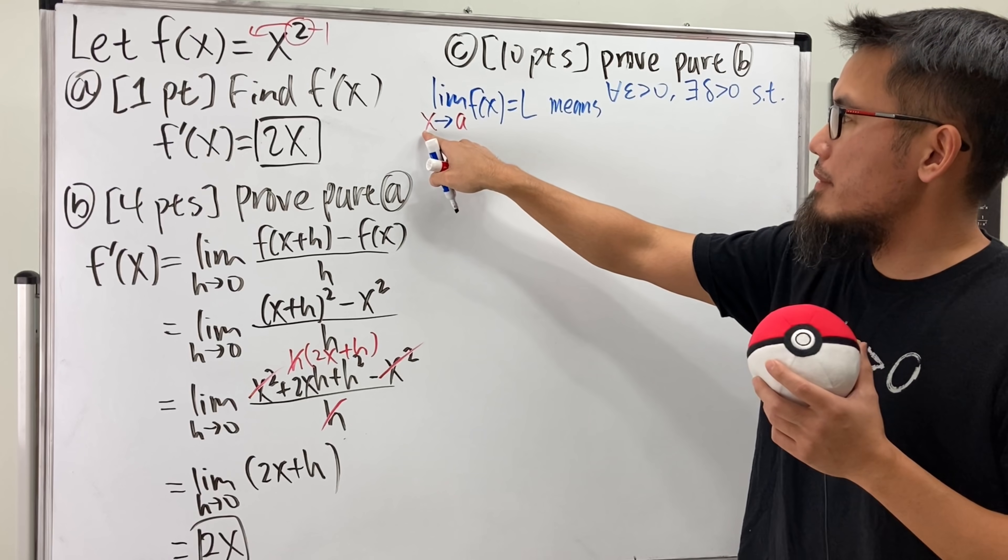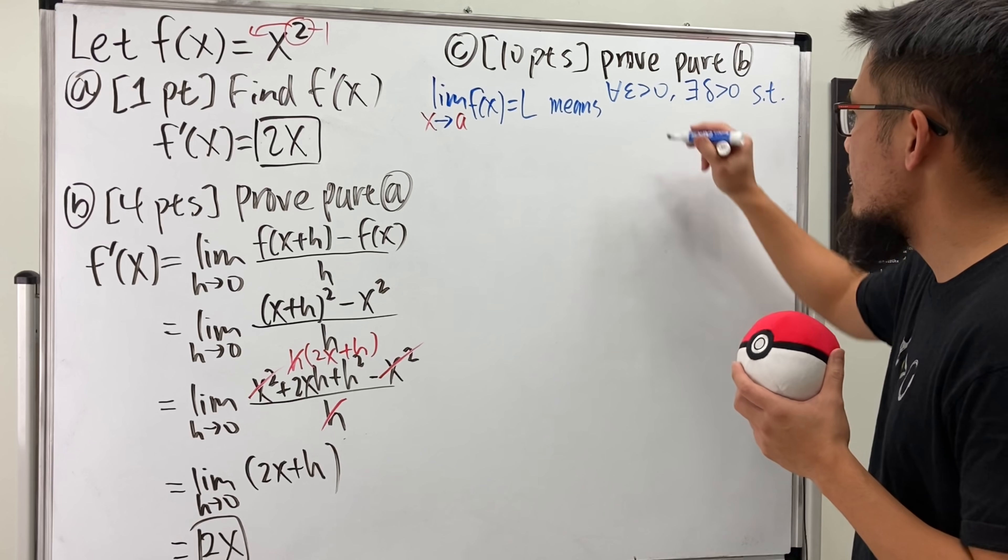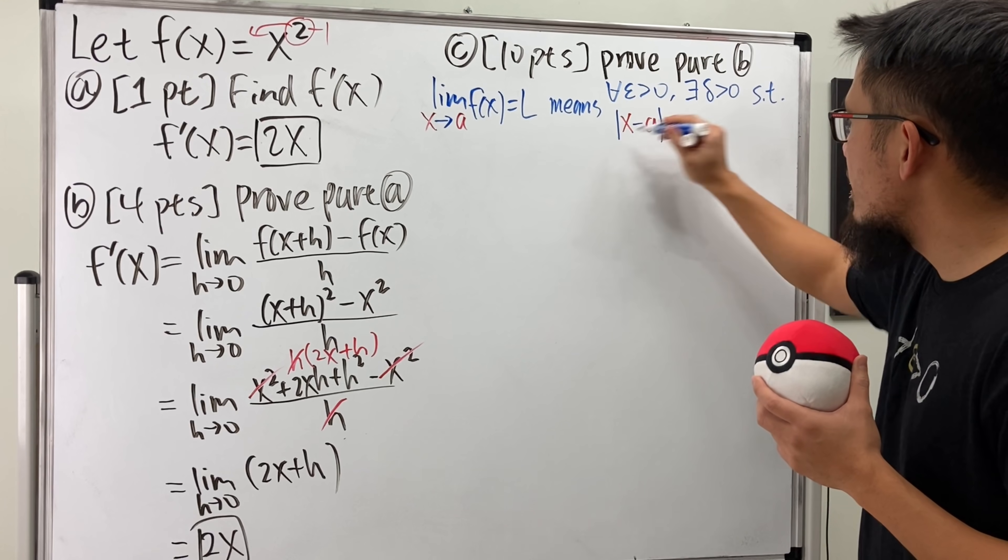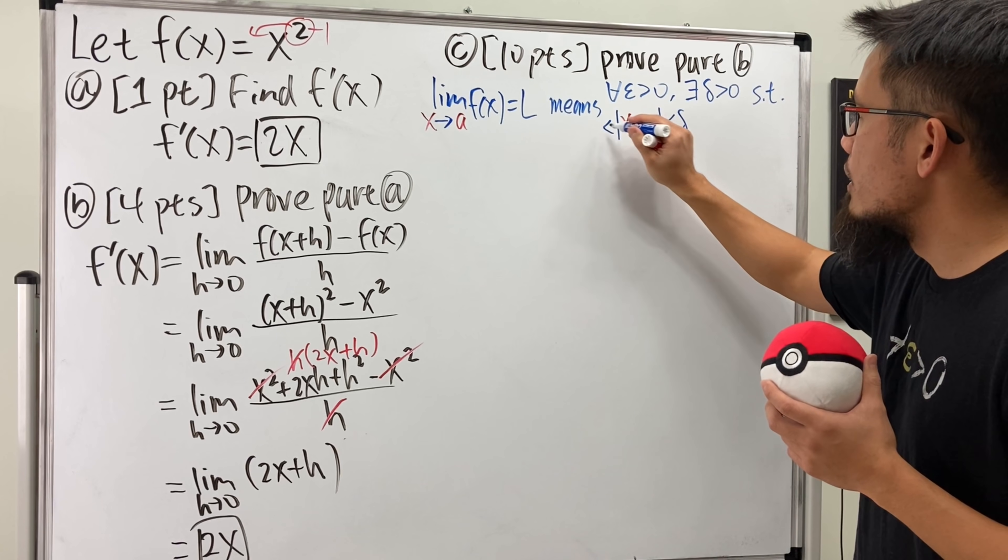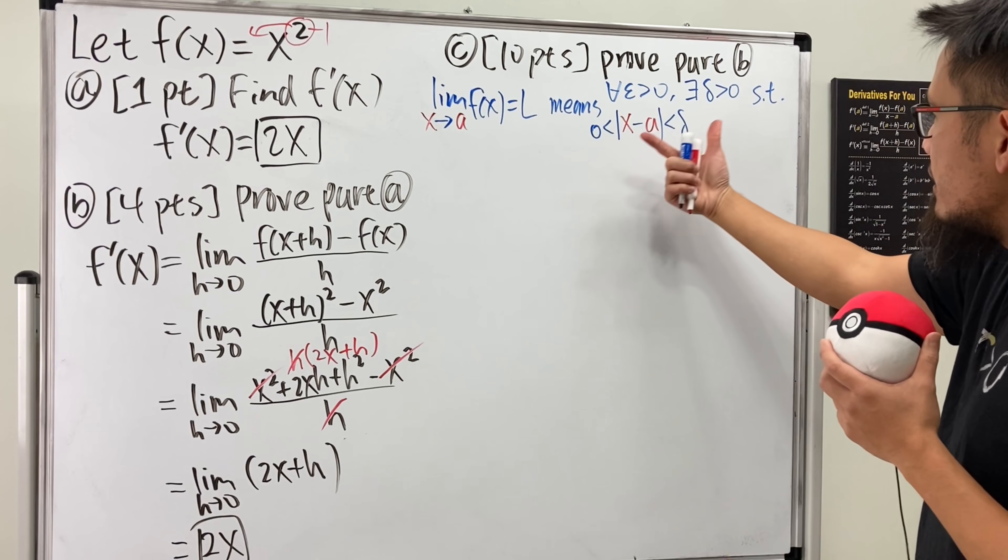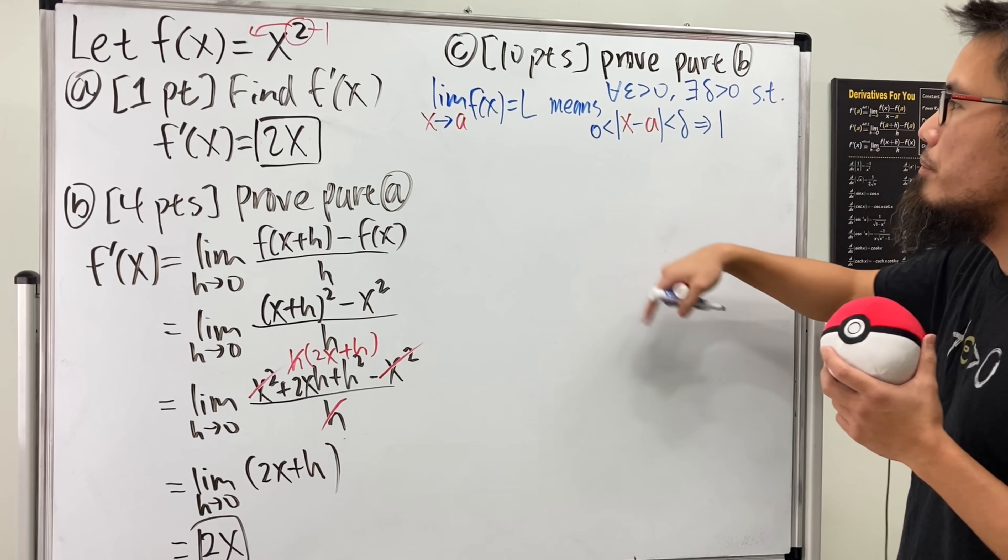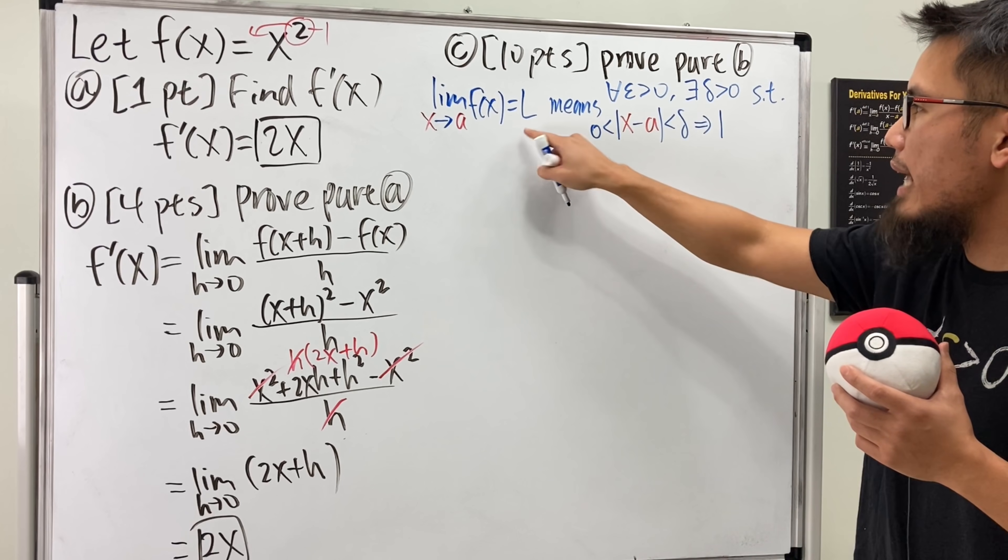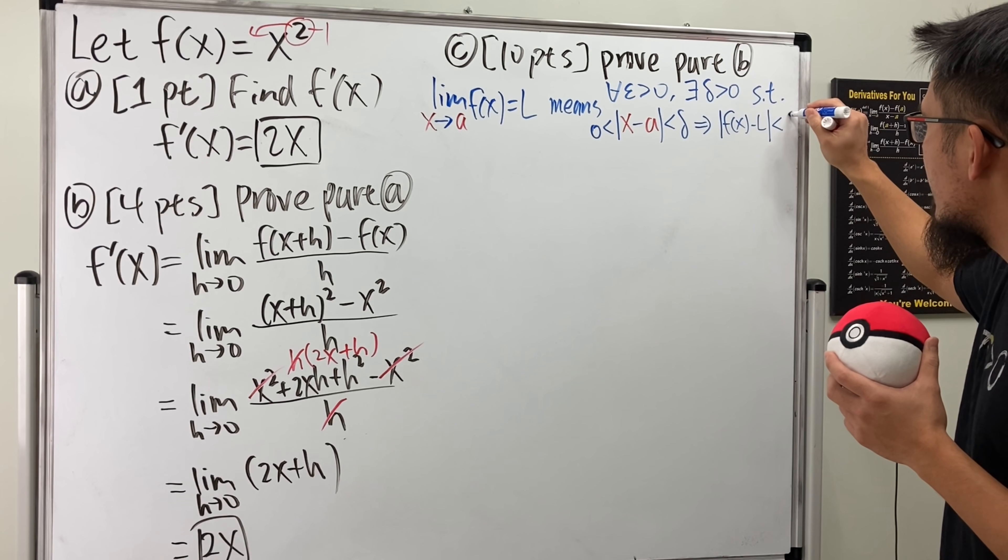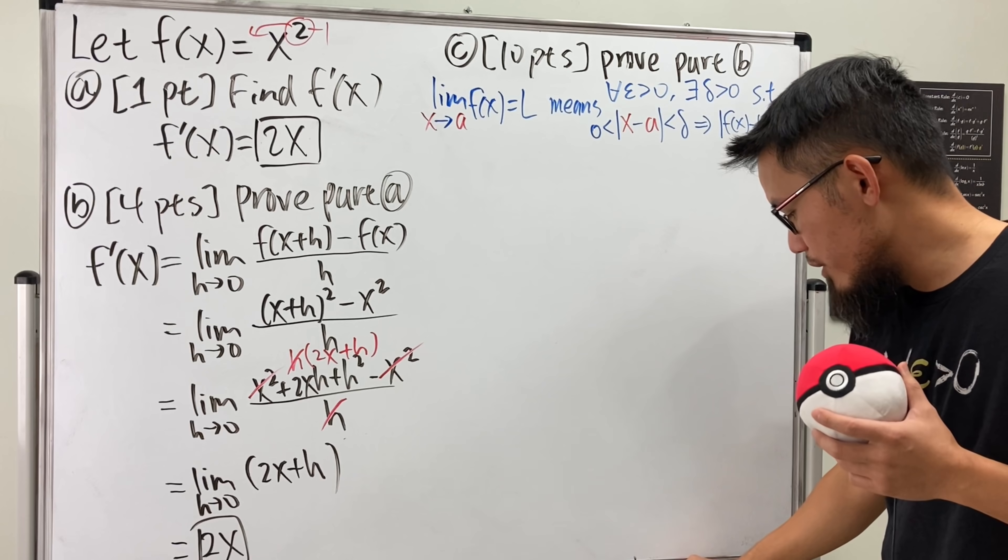Anyway, continue such that, the distance between x and a, and we don't need to have x to be the same as a, so you can write it down like this. Absolute value of x minus a, we want the distance to be less than delta, but they don't have to be equal, so we want this to be greater than zero. If this happens, well, we will end up with the absolute value, meaning the distance between this and that. So I'll put it down as f(x) minus L, this right here will be less than epsilon. Yes. That's the definition of a limit.